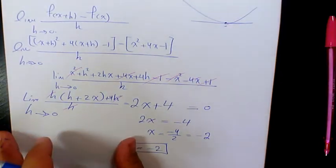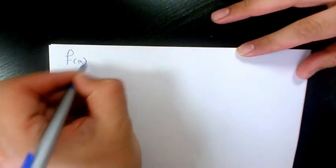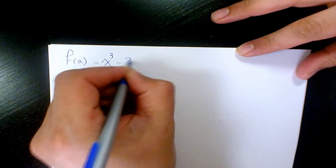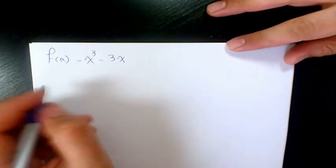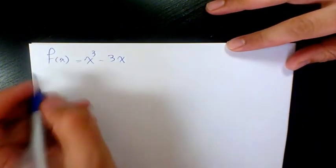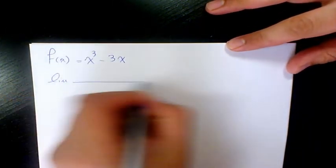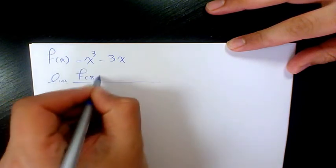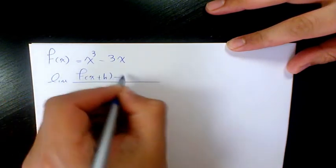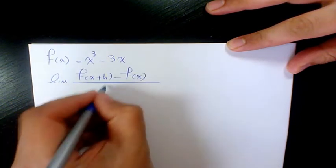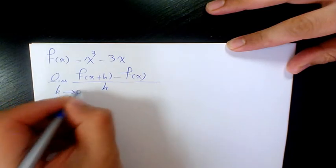Let's see the next example. f(x) = x³ - 3x. I'm going to write the limit of f(x+h) minus f(x) divided by h, when h approaches 0.